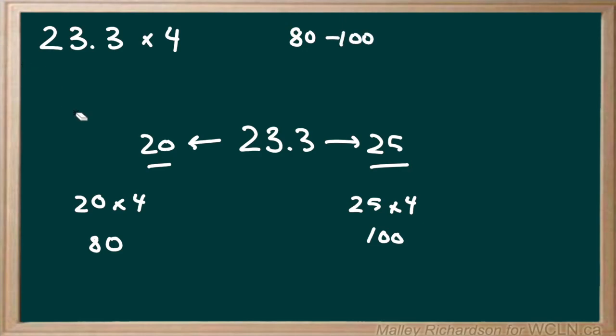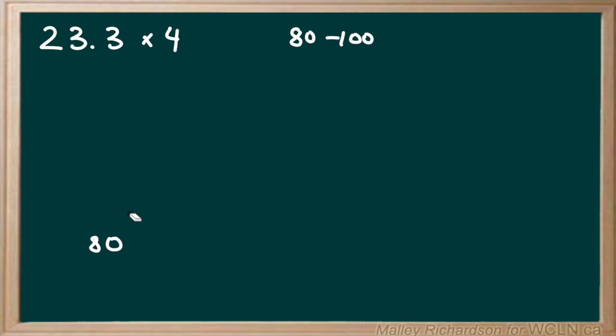Now again you don't have to do this. This is just an estimation to see where our final answer will lie. Now to begin the actual question we just want to first write our numbers down. So we have 23.3 times 4.